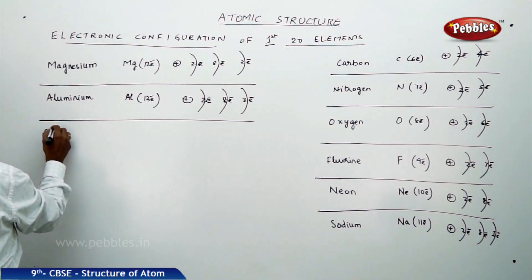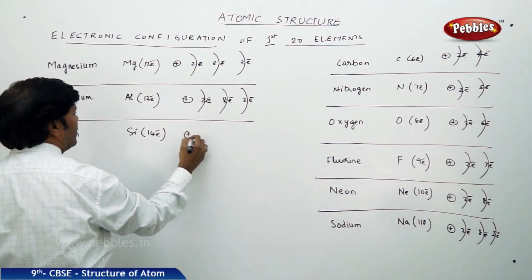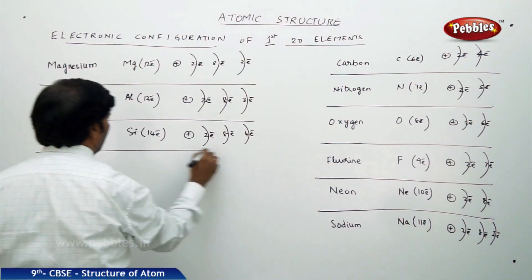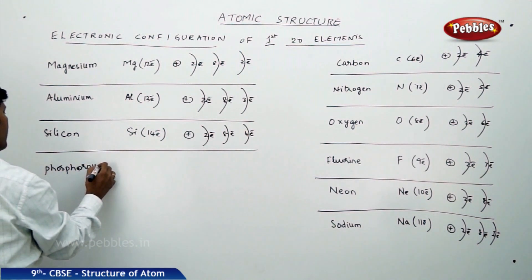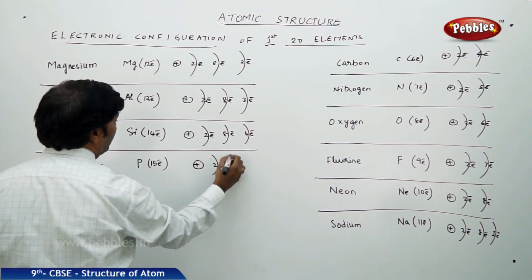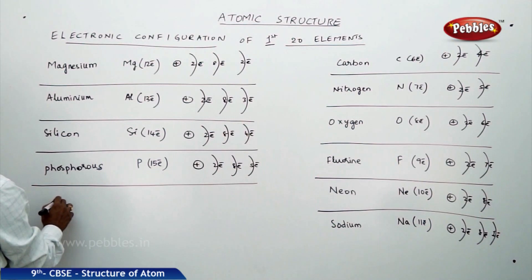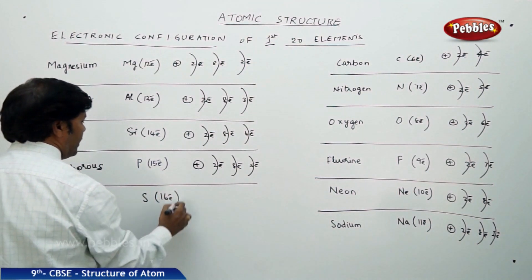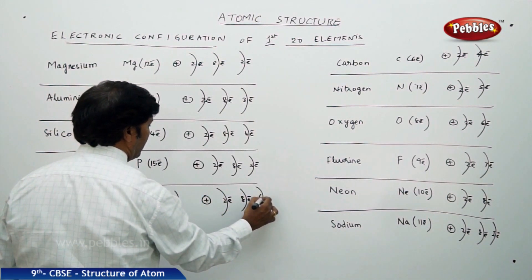Silicon, symbol Si, has 14 electrons: nucleus, first shell 2 electrons, second shell 8 electrons, third shell (valency shell) 4 electrons. Phosphorus, symbol P, has 15 electrons: nucleus, first shell 2 electrons, second shell 8 electrons, third shell 5 electrons. Sulfur, symbol S, has 16 electrons: nucleus, first orbit 2 electrons, second orbit 8 electrons, third orbit 6 electrons.